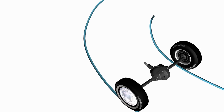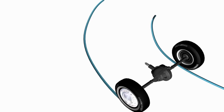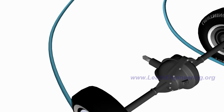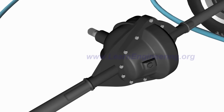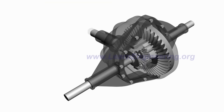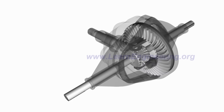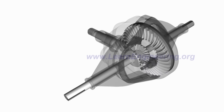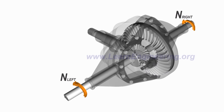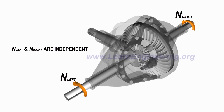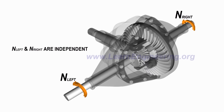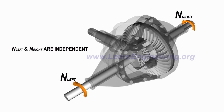This is exactly where the differential comes in. The ingenious mechanism in a differential allows left and right wheels to turn at different RPM while transferring power to both wheels. We will learn how the differential achieves this in a step-by-step manner using its simplest configuration.